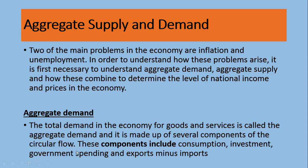Government also spends money — making buildings, running businesses, spending on people, making roads and dams — so government spending is also a component of aggregate demand. Then there is exports minus imports: imports are goods we buy from other countries and are excluded because they are not produced by us. In short, whatever all people in a country — consumers, producers, and government — spend on, except imports, makes the total aggregate demand.